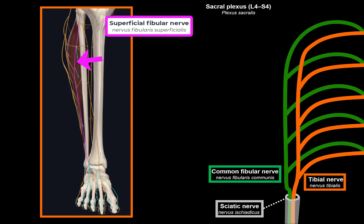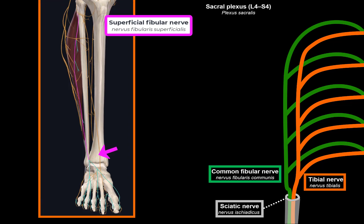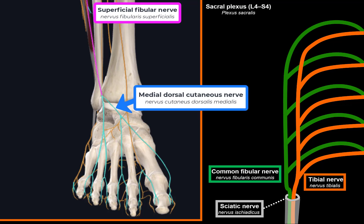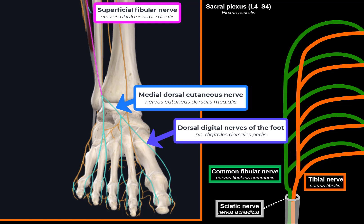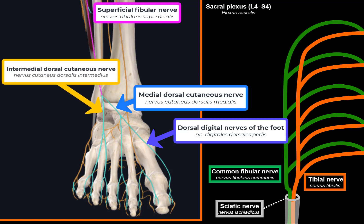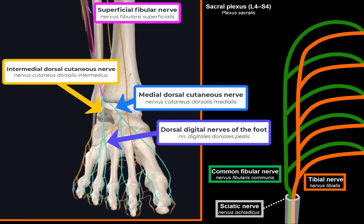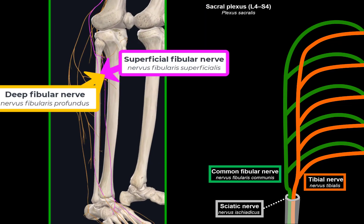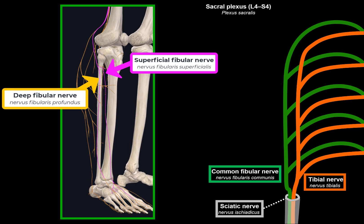The superficial fibular nerve runs between the fibula and fibularis longus, continues between the fibular muscles, giving off muscular branches to innervate them, then penetrates the fascia and runs superficially on the dorsum of the foot. It gives off the medial dorsal cutaneous nerve — splitting into dorsal digital nerves for the medial first toe, lateral second toe, and medial third toe — and the intermediate dorsal cutaneous nerve for the lateral third toe, whole fourth toe, and medial fifth toe.